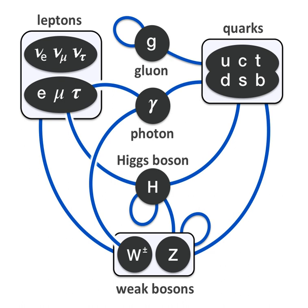Mathematical consistency of the Standard Model requires that any mechanism capable of generating the masses of elementary particles becomes visible at energies above 1.4 TeV; therefore, the LHC was built to answer whether the Higgs boson actually exists. On 4 July 2012, two experiments at the LHC independently reported finding a new particle with a mass of about 125 GeV — on the order of 133 proton masses — which is consistent with the Higgs boson. It was later confirmed to be the Higgs boson.